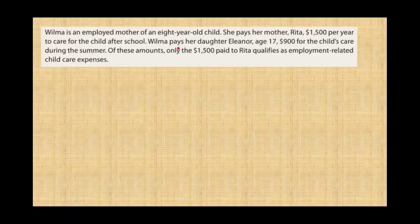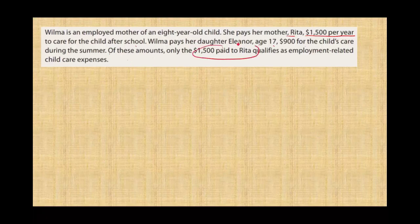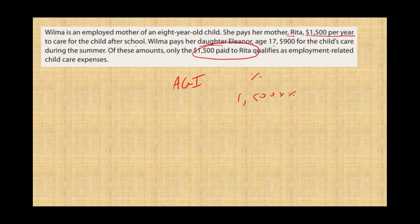Here's an example: Wilma is an employed mother of an eight-year-old son. She pays her mother Rita $1,500 per year to take care of her child after school. She also pays her daughter Eleanor, age 17, $900 for childcare during the summer. Of this amount, only the amount paid to her mother is eligible, because Eleanor is under 19. Next we'd find her AGI, find the appropriate percentage, and take $1,500 multiplied by that percentage to find the credit.